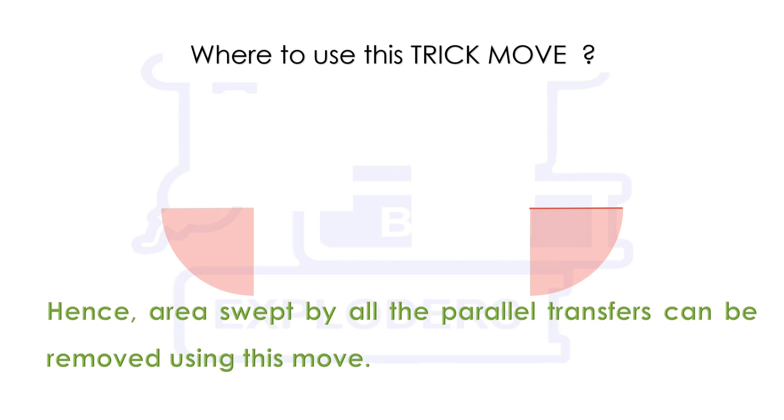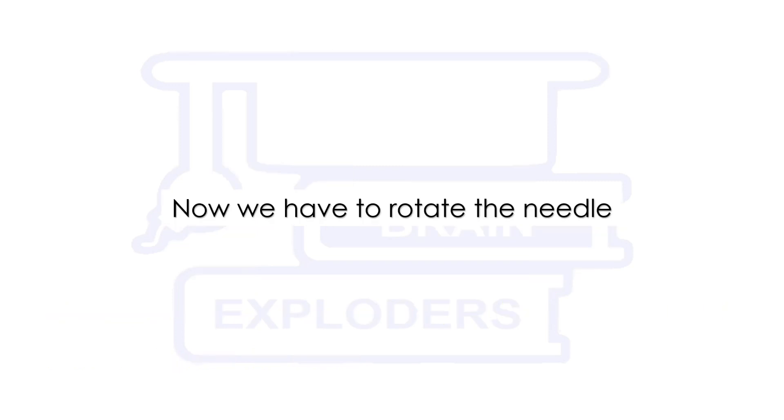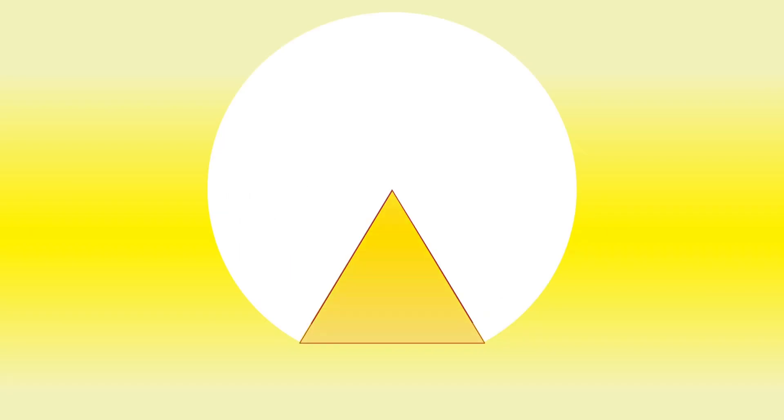Now this is the third step and here we have to rotate the needle. Suppose the needle is rotated in this equilateral triangle. So let's do something here. Let's divide it into equal parts and this time we will rotate it like this.